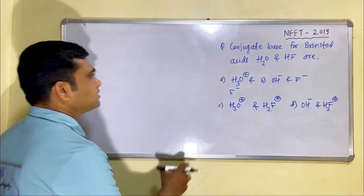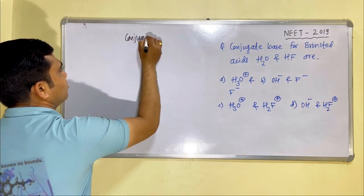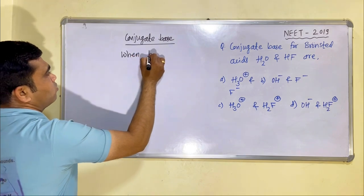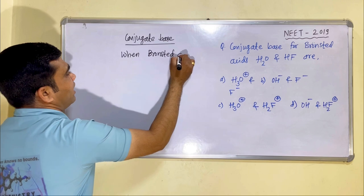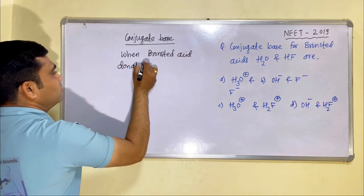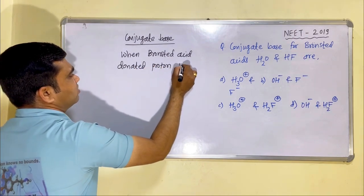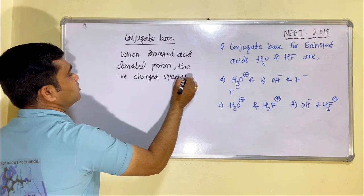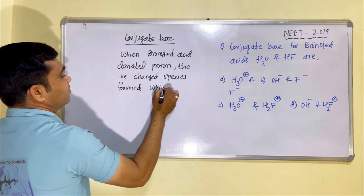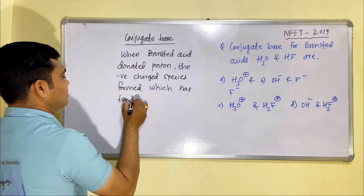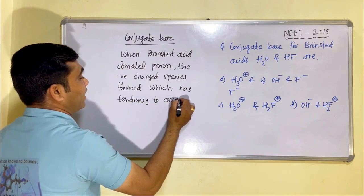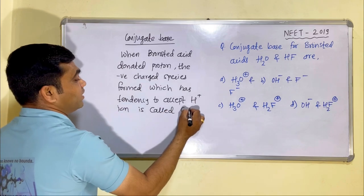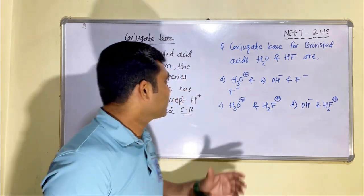It's better to use some concept. Let us discuss what is meant by conjugate base. When a Bronsted Acid donates a proton, the negatively charged species which has the tendency to accept an H+ ion is called the conjugate base. This is the definition of conjugate base given by Bronsted.